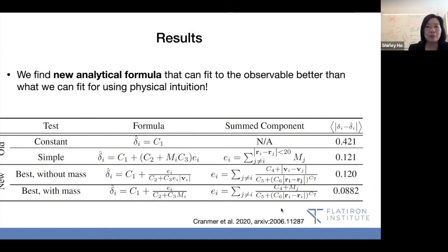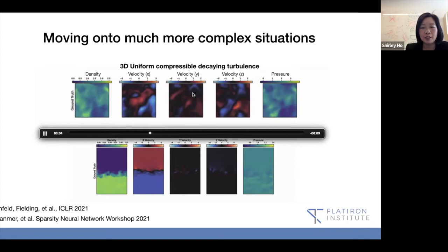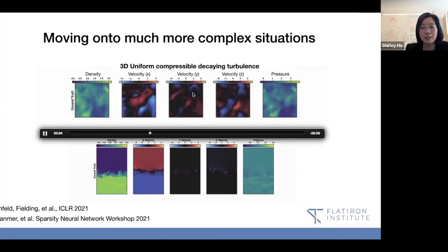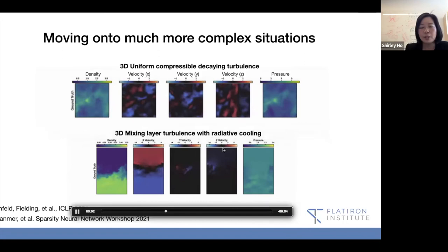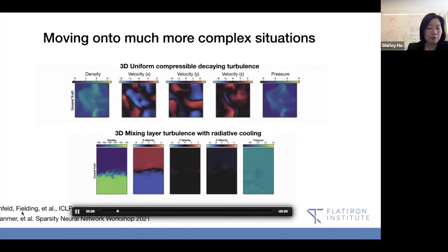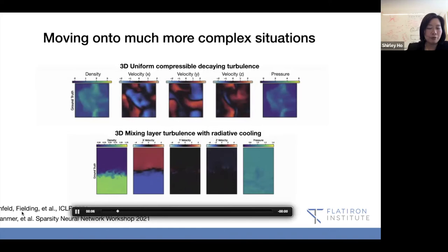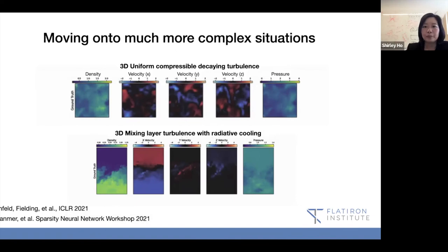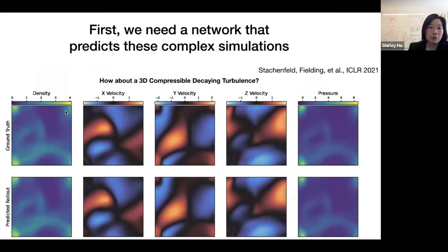So moving on to more complex relationships and simulations and situations. Here is a 3D compressible decaying turbulence, very low resolution just because of training. We're showing the ground truth here. Density, velocity X, Y, Z, and pressure. And we're looking at these other 3D mixing layer turbulence with radiative cooling. This is work that's recently published in NeurIPS Clear, led by Kimberly Stetchum-Farrell and people outside general fielding. I'll talk about the sparsity network workshop part two. First we need a network that predicts these complex simulations very well. On top is the ground truth. On the bottom is the predicted rollout.